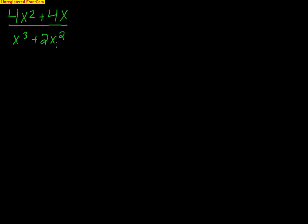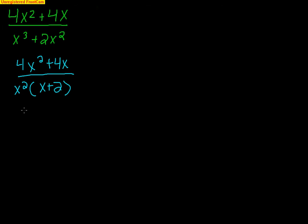Here we get (4x² + 4x) all over (x³ + 2x²). Right away you can see that the bottom does factor. You can take an x² out of both parts, so you get x²(x + 2). We see that we have two linear factors, and we see that x² is repeating. For the repeating factor, each power gets its own fraction, so this is going to look like: A/x + B/x² + C/(x + 2).